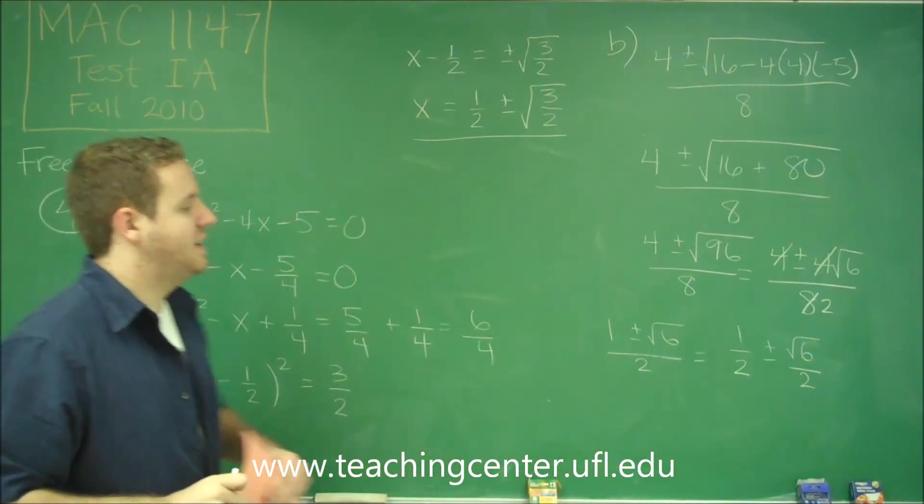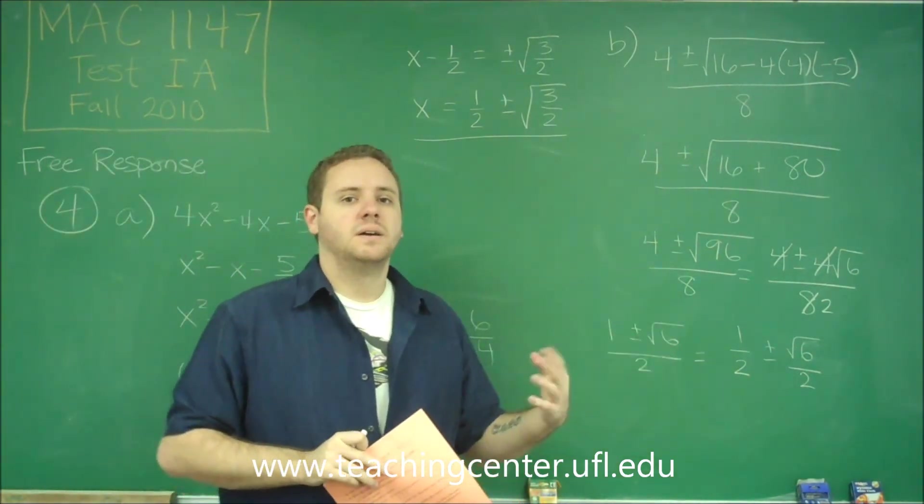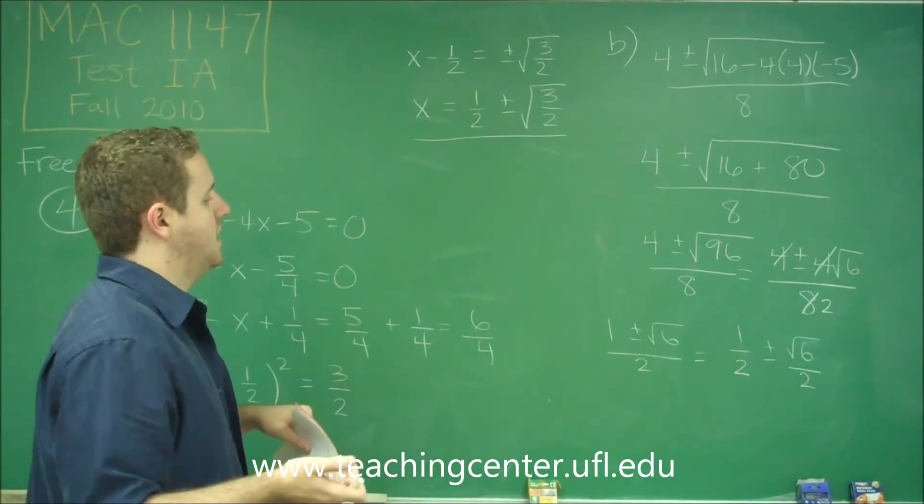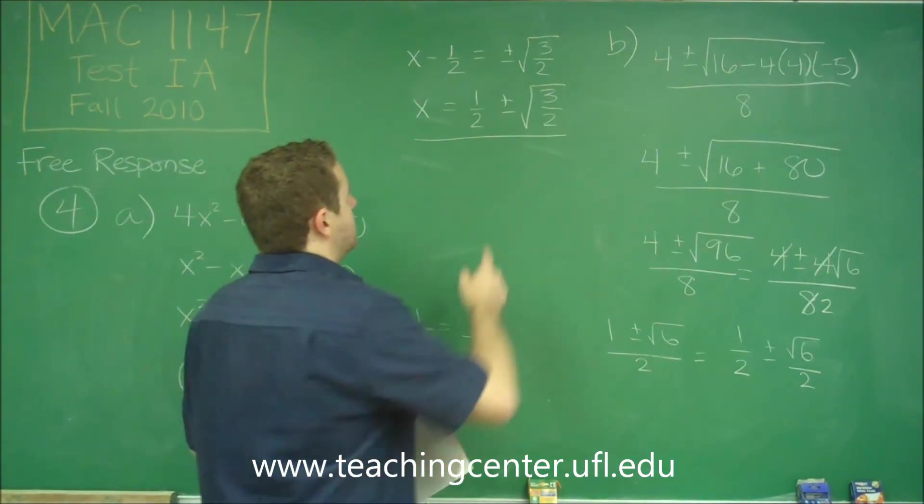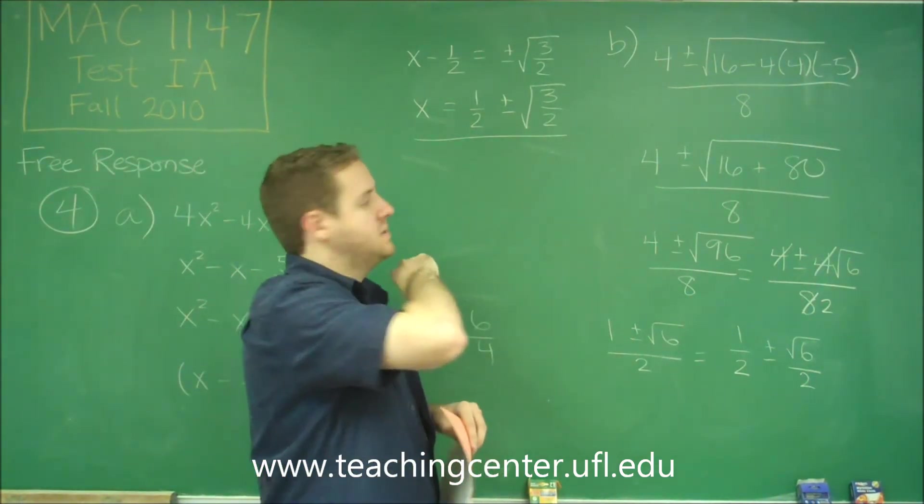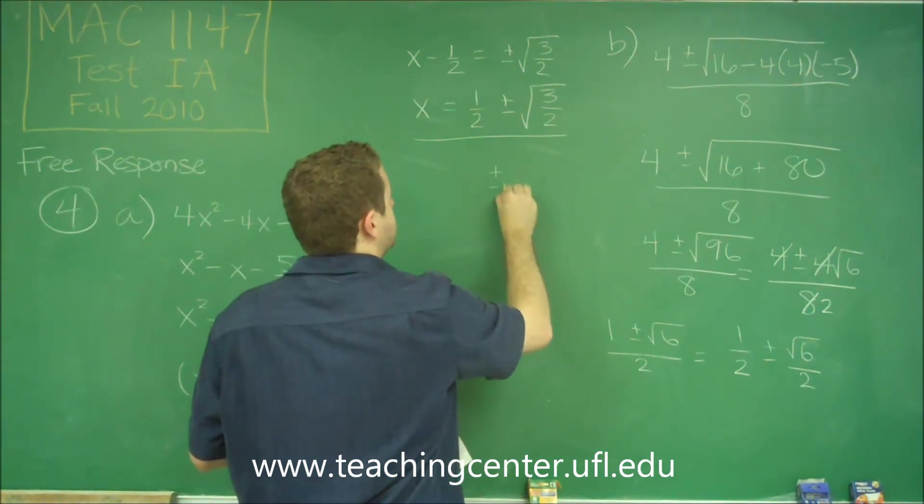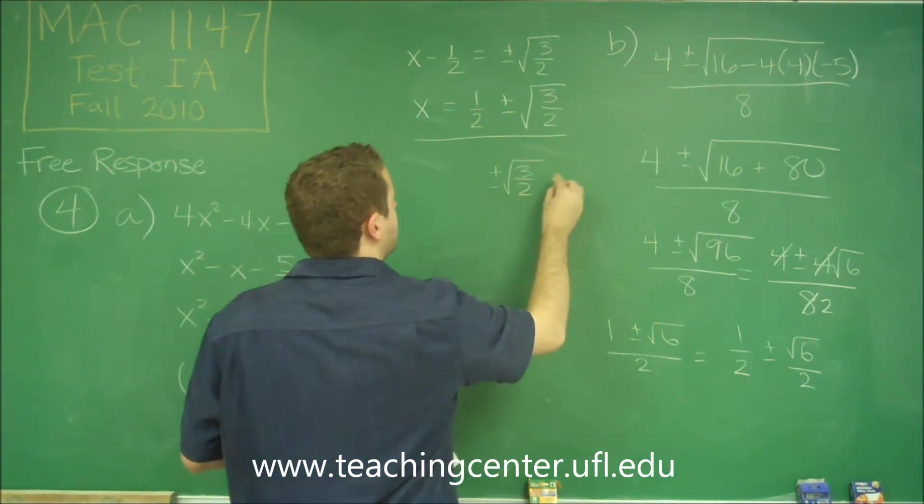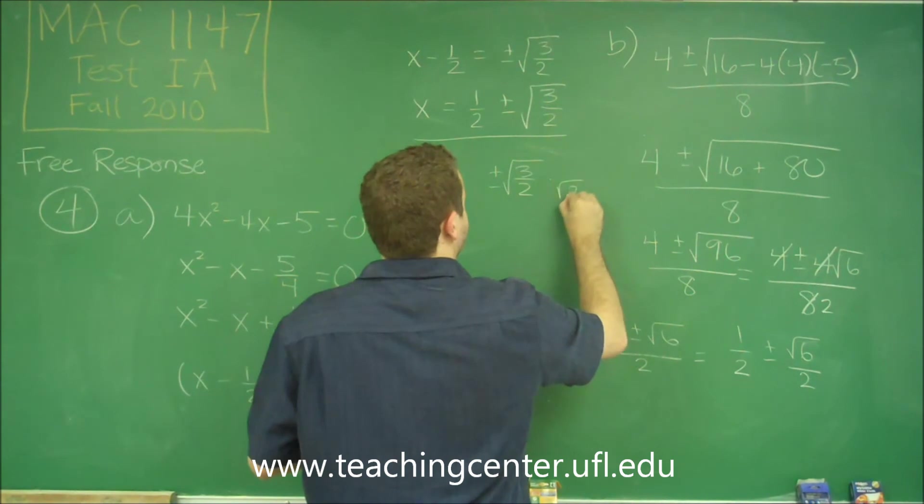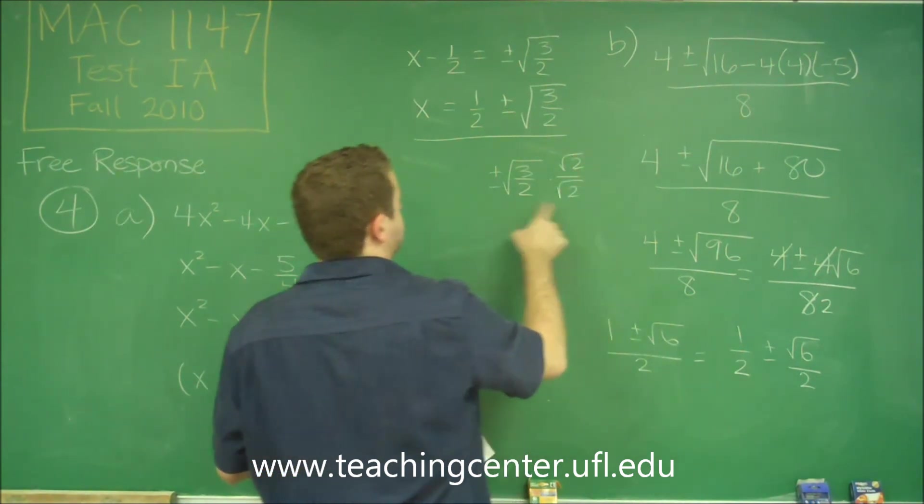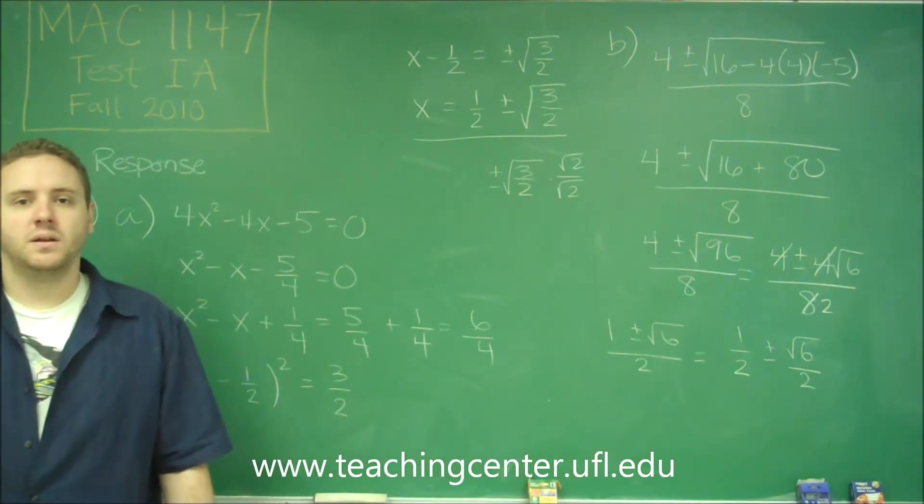So you might be wondering, is that the same thing we got here? It actually is. Let's see how we can show that. If you wanted to rationalize this, you would need to multiply this ± √(3/2) by √2/√2 to get the denominator to be a whole number.